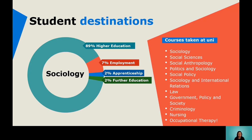So where do our students from sociology go after sixth form? We can see here that 89% of them go straight into higher education. Just because you study sociology doesn't mean you'll necessarily go on to study sociology at university, but it is a good subject that gives you the chance to move on to different subjects. Courses taken by our students include sociology, other social sciences, social anthropology, politics and sociology, social policy, sociology and international relations, law, government policy and society, criminology, nursing, and occupational therapy. Sociology is a subject that can really help you move on to any other subject and gives you that understanding of society needed in a range of different professions.